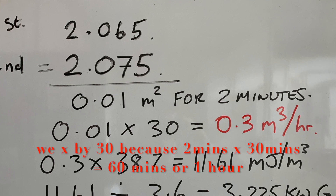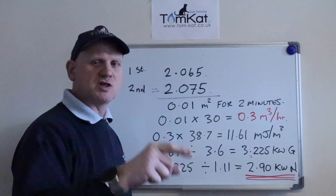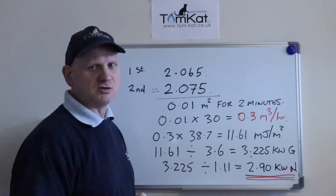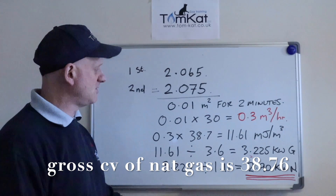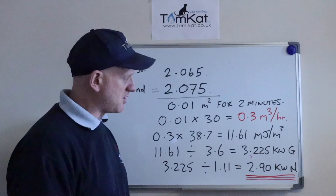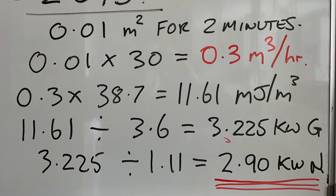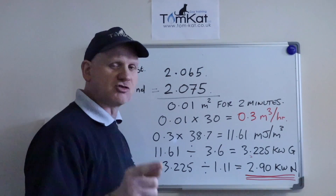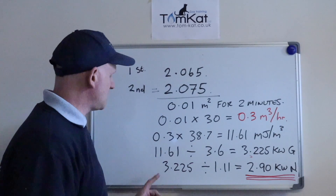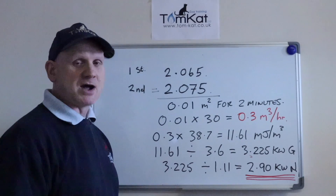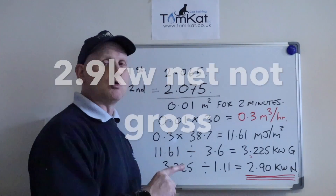We need meters cubed per hour, so we take the 0.01 and multiply it by 30, which gives us 0.3 meters cubed per hour. In some situations we could go to the manufacturer's instructions and see if they give us the meters cubed per hour, or we can continue and turn it into kilowatts net. Remember from 2000 we need the net figure. We take the 0.3 and multiply it by the calorific value of gas — 38.7 — which gives us 11.61 megajoules per meters cubed. That's how much energy we've used. Then 11.61 divided by 3.6, because the 3.6 turns our megajoules into kilowatt gross — and remember when we gas rate we gas rate in gross — which gives us 3.225 kilowatts gross. If we want to turn that into net, we do 3.225 divided by 1.11, because remember the latent heat is 11%, and it comes out at 2.9 kilowatts net.